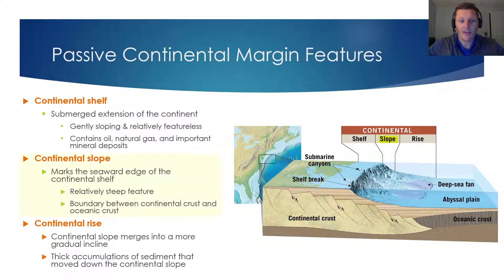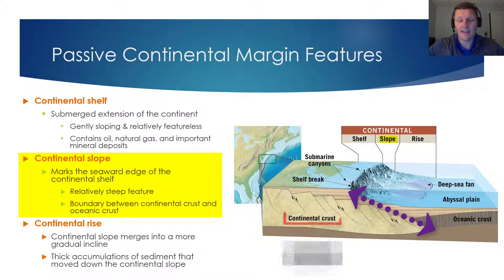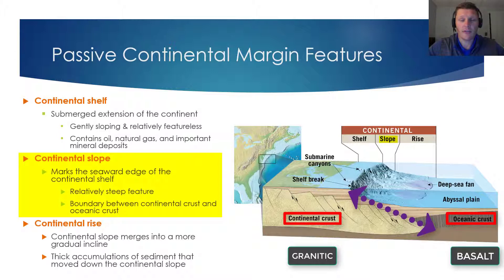The second feature is the continental slope, which marks the seaward edge of the continental shelf. The most obvious feature of the continental slope is how steep it is — there is a rapid change in depth once you encounter it. The continental slope also marks the boundary between continental crust and oceanic crust. As a refresher, oceanic crust is more dense than continental crust because it is composed of high-density basalt, whereas continental crust is composed of less dense rocks like granite.